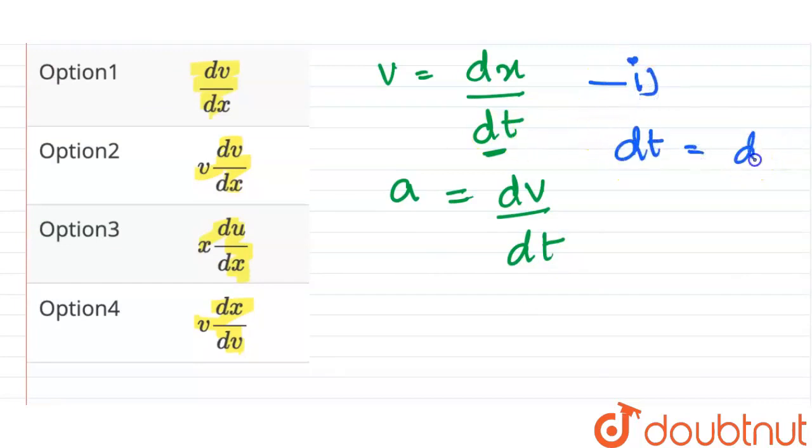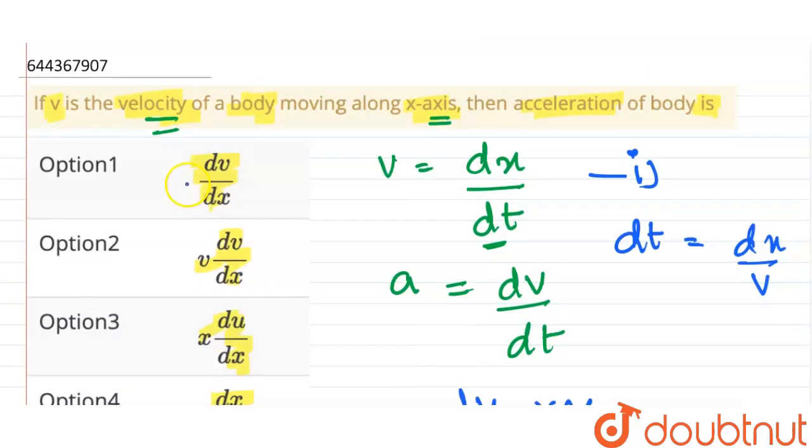Substituting this dt in the expression of acceleration, we can write this as dv upon dx into v. So this gives the relation between acceleration and displacement to be v dv by dx. Alright, that is, the acceleration of the body will be v dv by dx.